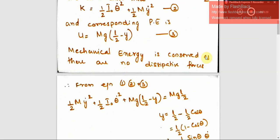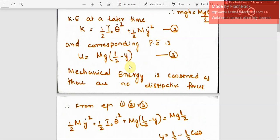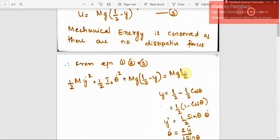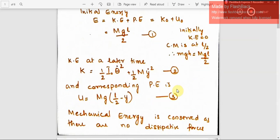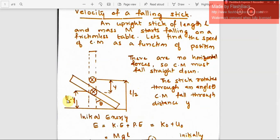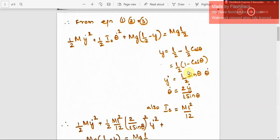Mechanical energy is conserved as there is no dissipative force — the stick is falling on a frictionless table. So combining equations 1, 2, and 3, we equate the total kinetic plus potential energy to the initial total energy MgL/2. We also use the geometric relation y = L/2 minus L/2 cos theta. Differentiating with respect to time gives ẏ = (L/2) sin θ · θ̇, and rearranging gives θ̇ = 2ẏ/(L sin θ).